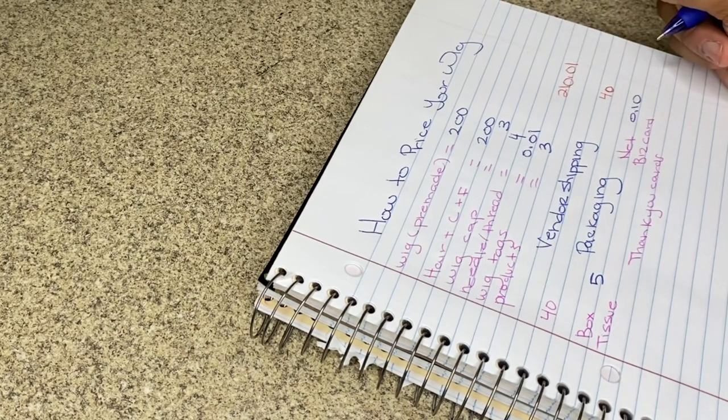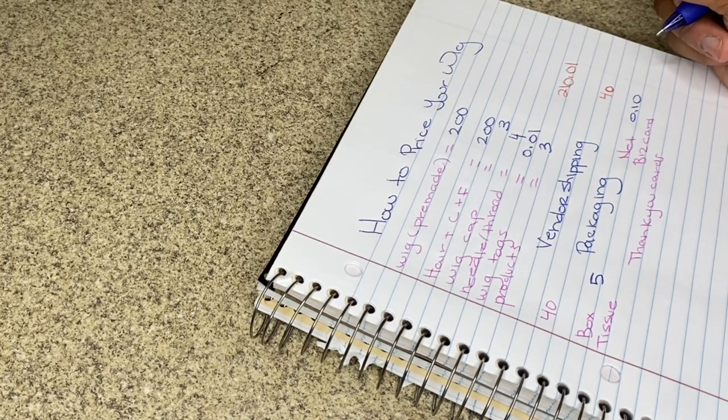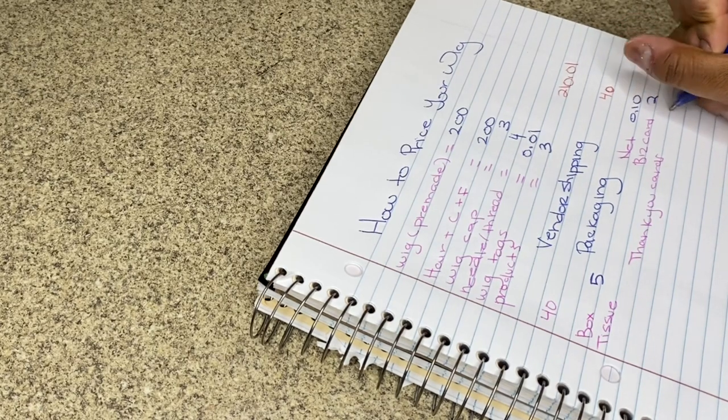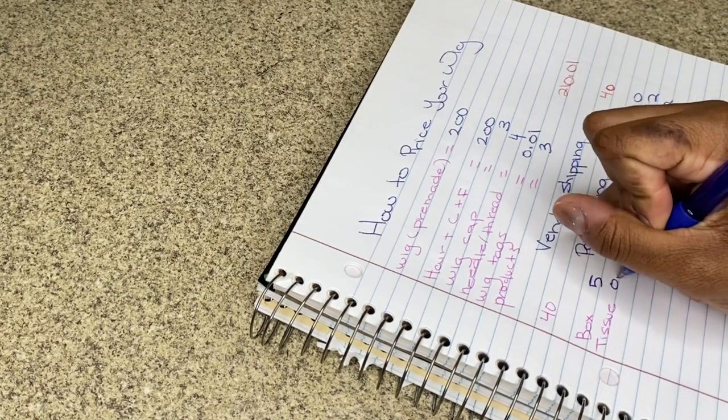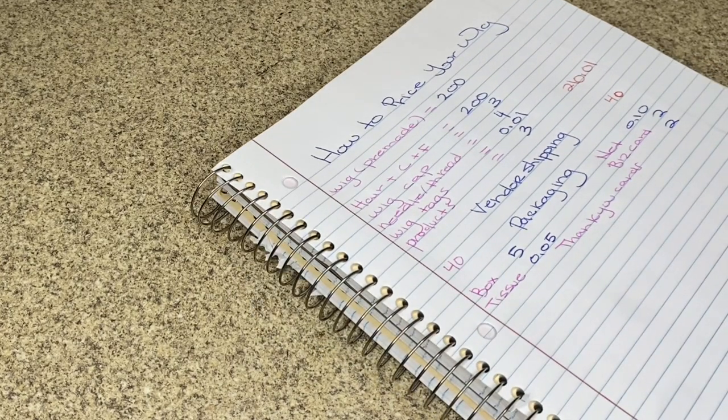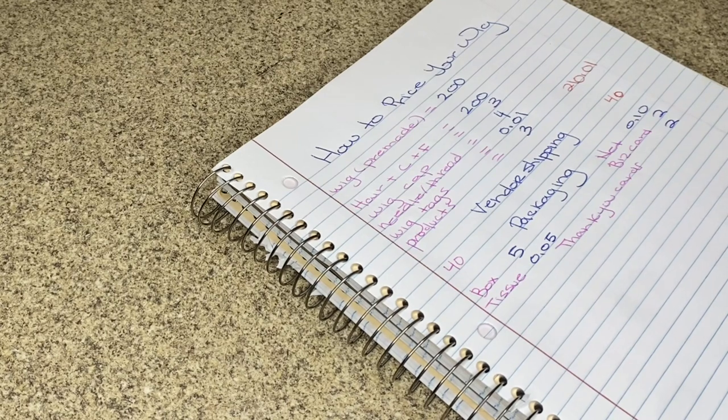I get my business cards and thank you cards on vistaprint and they're very expensive, so we could just say two dollars. And then you want to add in your tissue paper - you can get a bag that has a hundred in it, you want to use about five, so do the math on that. We'll just say that we want to add all of this together, so that is $9.15.